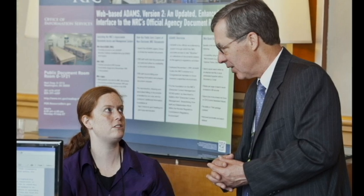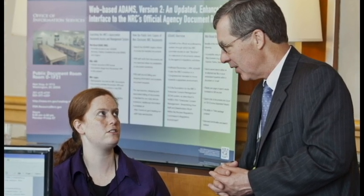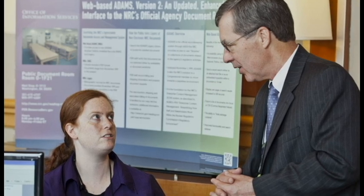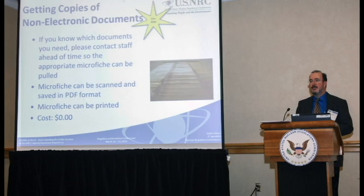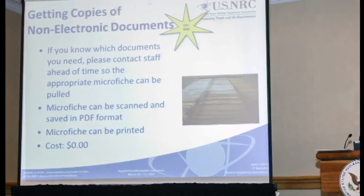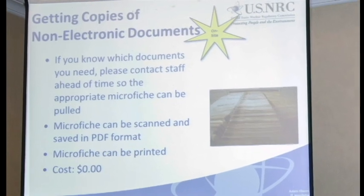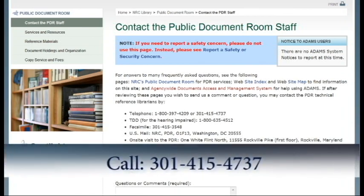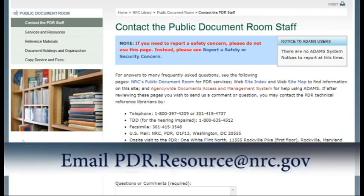The NRC Public Document Room Reference staff are available to help you with Atoms. They can assist you with Atoms hardware and software issues, searching the online libraries, as well as obtaining copies of pre-Atoms documents in various formats. These materials may be ordered for a fee. Contact staff during regular business hours at 301-415-4737 or email them at pdr.resource@nrc.gov.